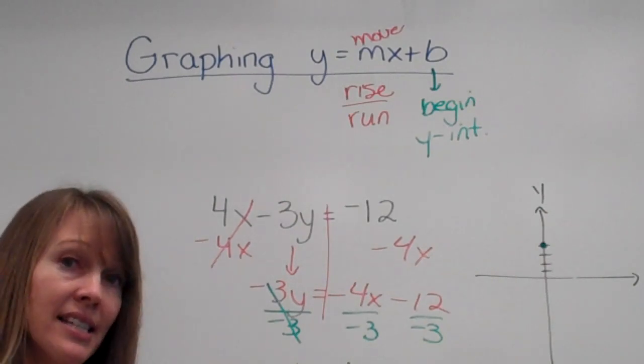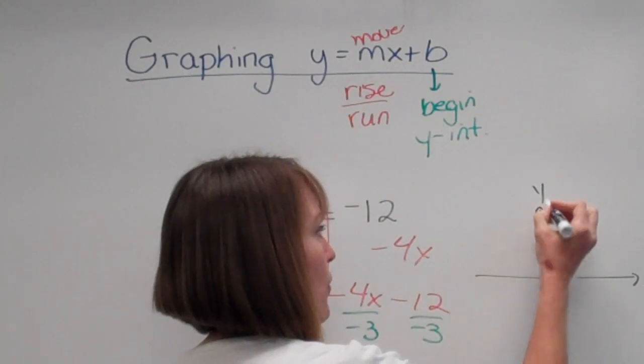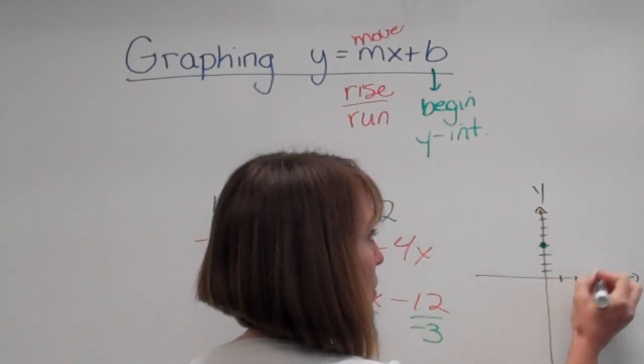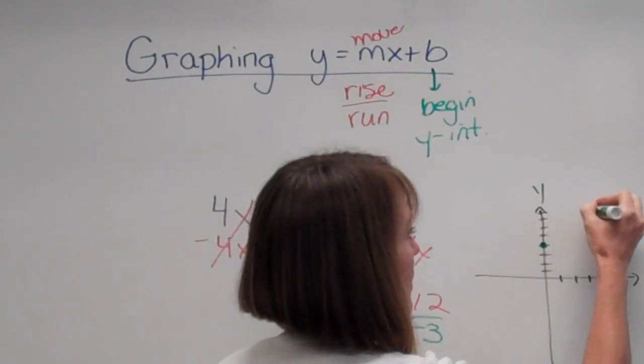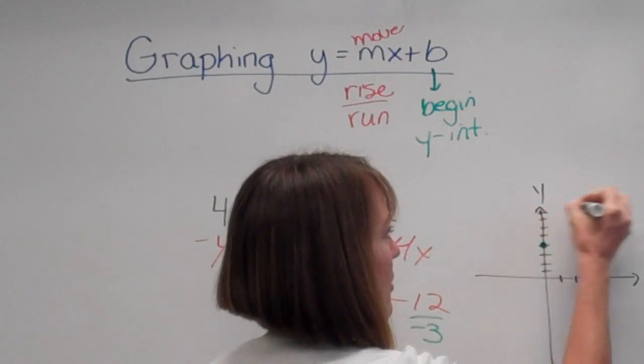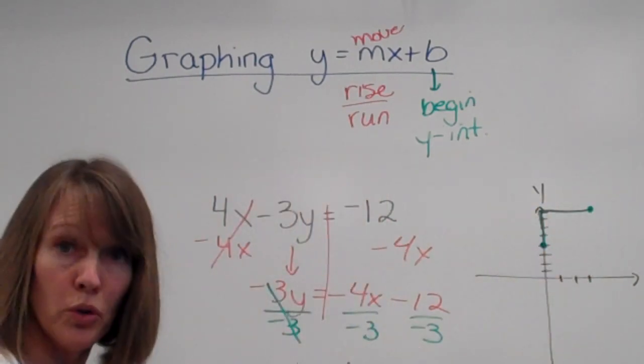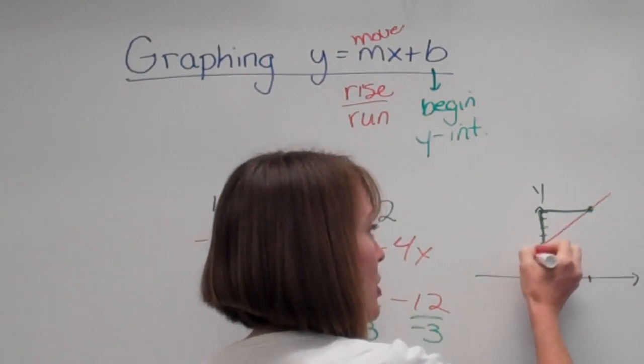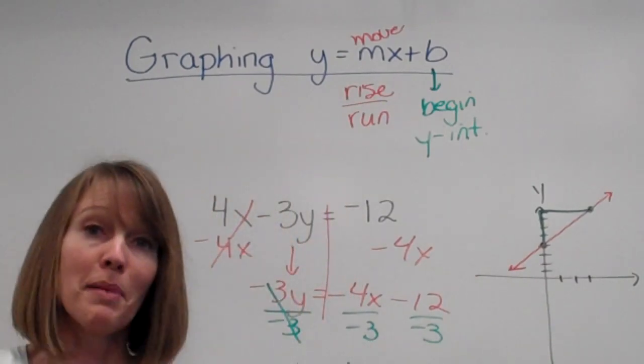And then my slope is positive 4, rise. So 1, 2, 3, 4. And a positive 3, run. 1, 2, 3. So my next point is going to be right here, 4, 3. And now I'm going to use my ruler, and I'm going to connect these points with a nice straight line, go through the points, and put arrows on the end to sketch my graph.